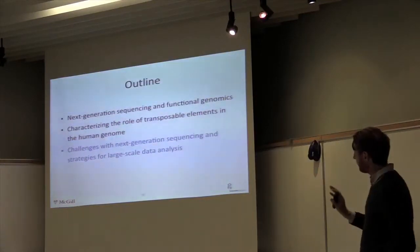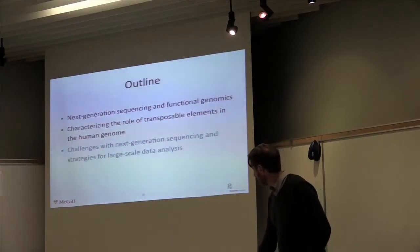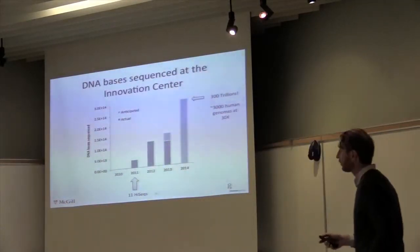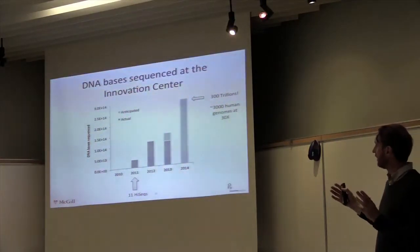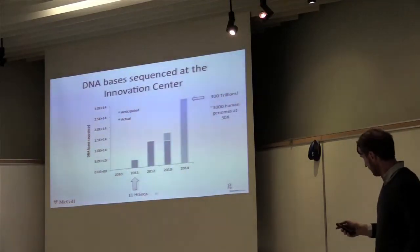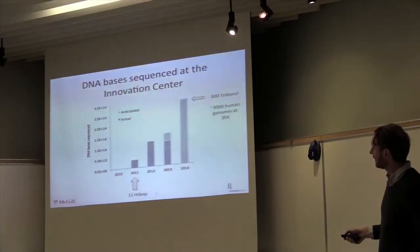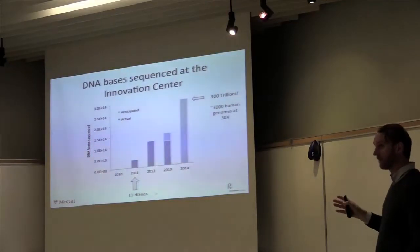In the little time I have left, I'll cover the last point — challenges with sequencing analysis and a few strategies. This is a snapshot of the type of data we generate at the innovation center. We've been in business for much longer, but you can't see it on this scale. This is when we acquired 11 HiSeqs. By now, we have 15 HiSeqs, and we anticipate generating 300 trillion bases of DNA this year — the equivalent of 3,000 human genomes at over 30x. It's quite a lot of data.